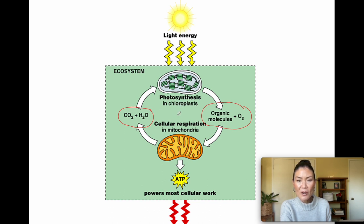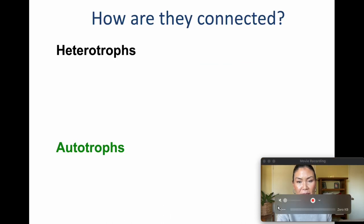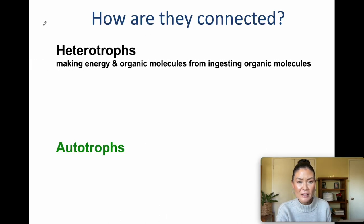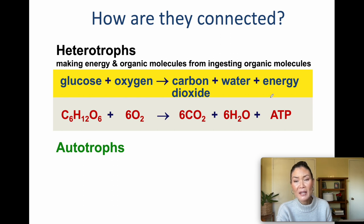This diagram shows how photosynthesis and cellular respiration are two very different processes that are dependent on each other — they're connected because the output or products of one process is the input or reactant of the other. Heterotrophs — that would be us — require other organisms as a source of food. We break down glucose in cellular respiration along with oxygen, producing carbon dioxide and water as waste products while building and making energy.